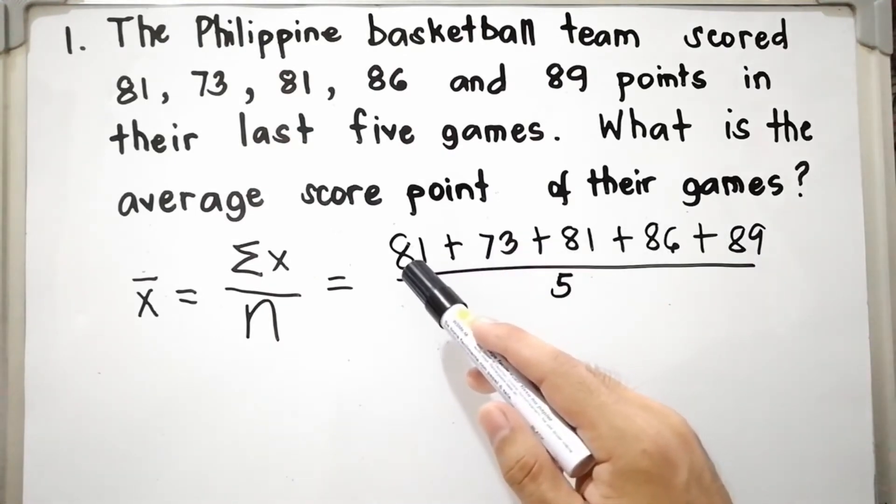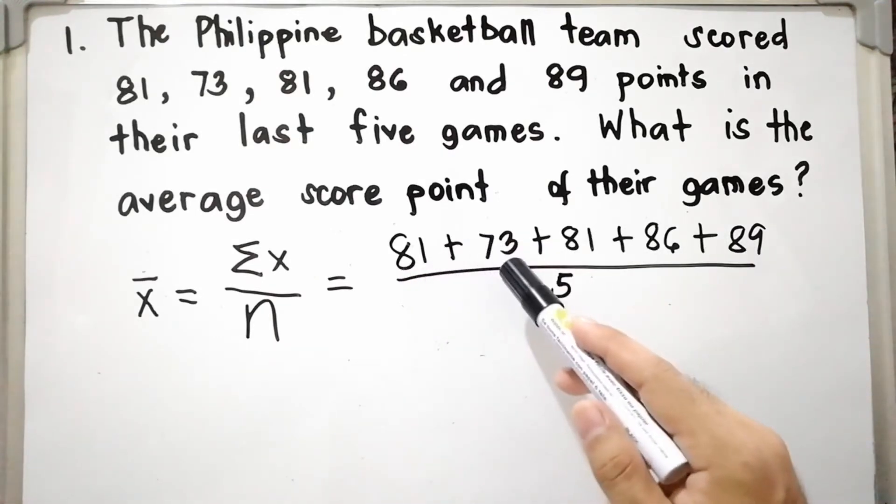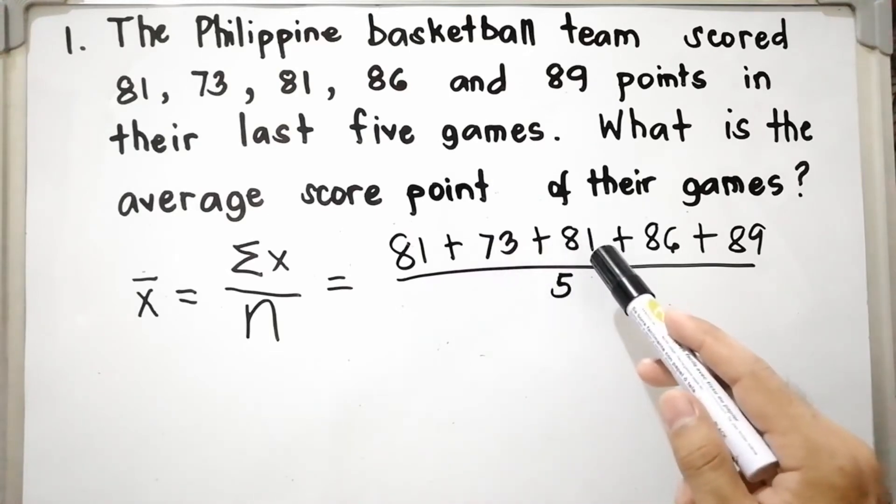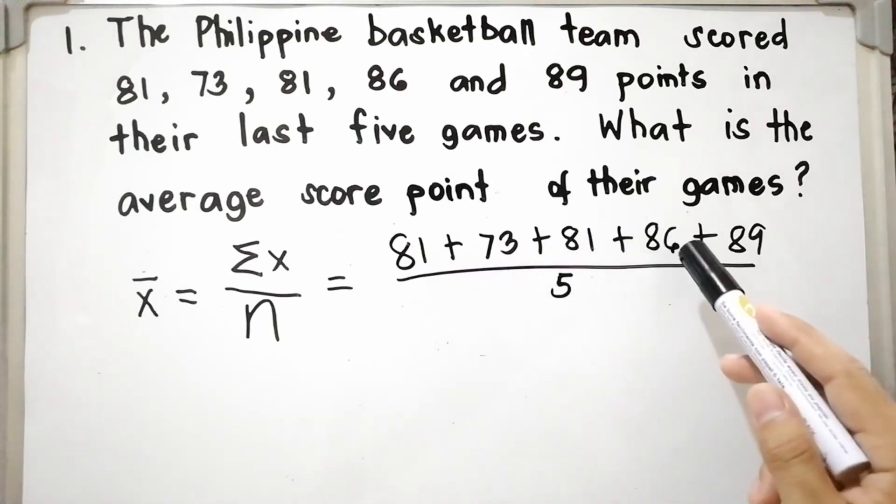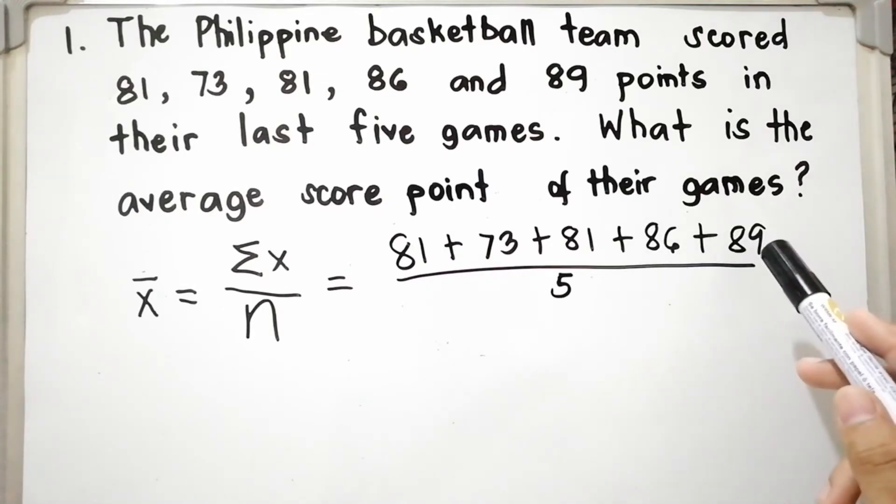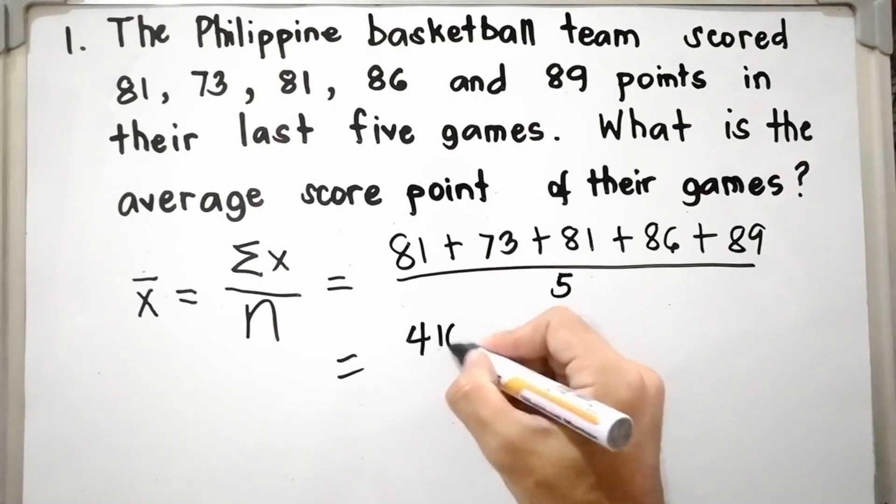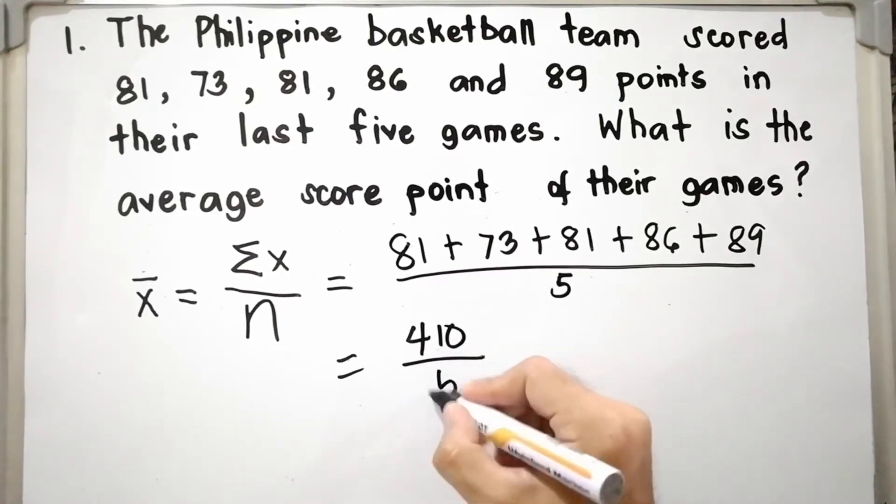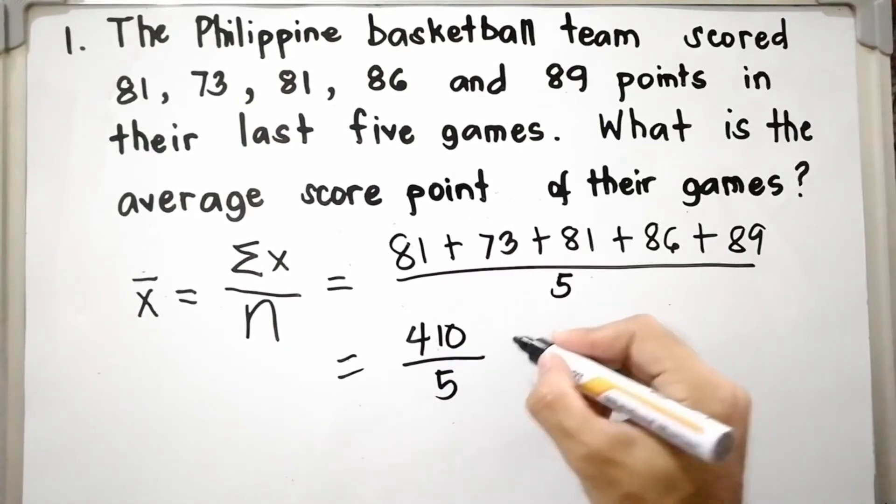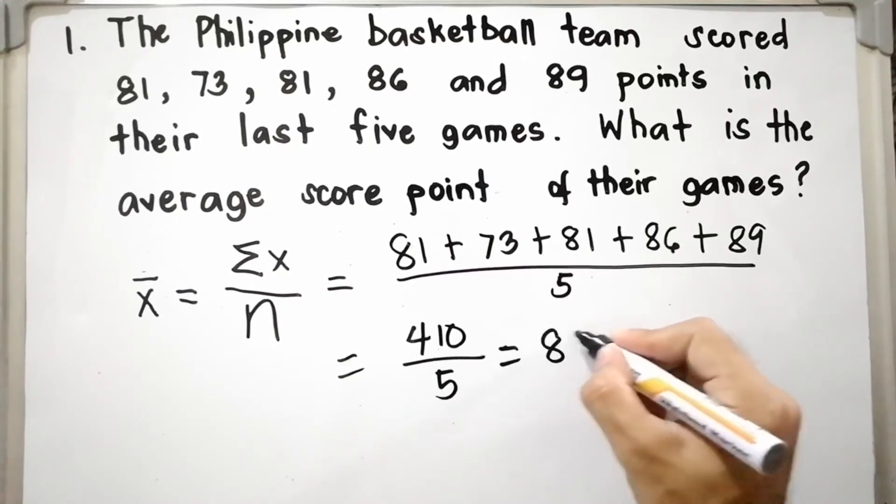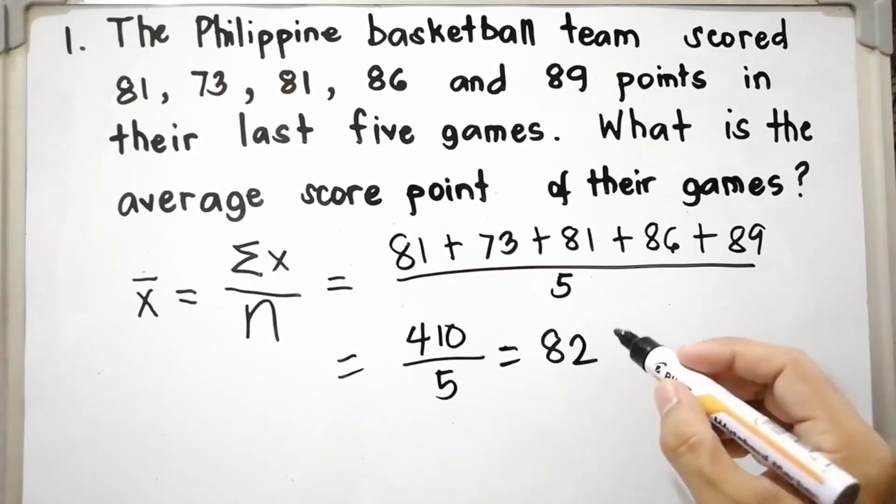Then add the units digits. 390 plus 1 equals 391, plus 3 equals 394, plus 1 equals 395, plus 6 equals 401, plus 9 equals 410. That is equal to 410 all over 5. 410 divided by 5, that is 82. Therefore, the average score point is 82.